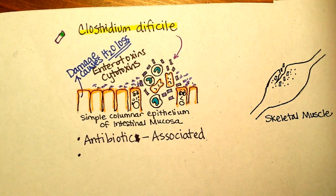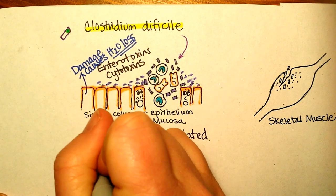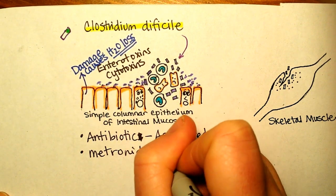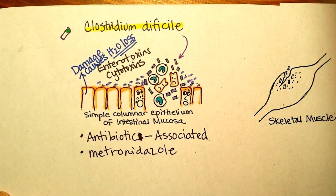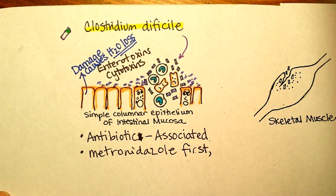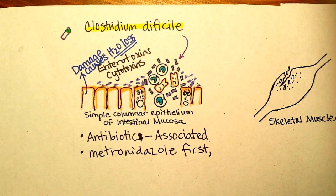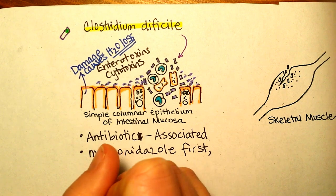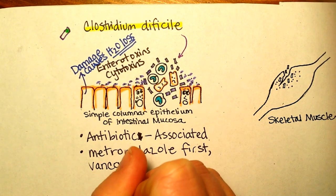If someone is diagnosed with C. diff, they are given the antibiotic metronidazole first. If it comes back — which it does, sometimes in as many as 50% of cases — if you get it for the first time you might have a 20% chance of it returning, and it can be hard to eradicate. If metronidazole doesn't work, they may prescribe vancomycin.